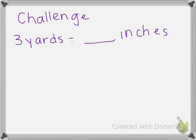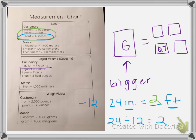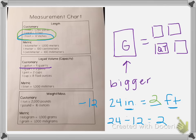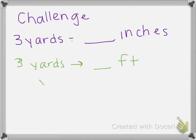So I'm going to go first from yards to feet. So I know that a yard is bigger than a foot so I'm going from bigger to smaller so I'm going to multiply and one yard is three feet. So I'm going to multiply this three times three which is nine. So three yards equals nine feet. That's my first step.